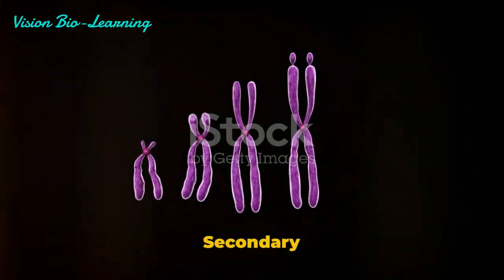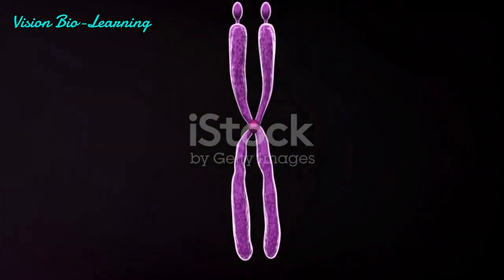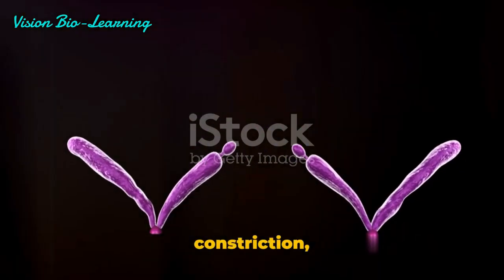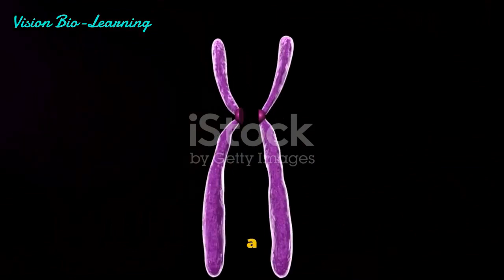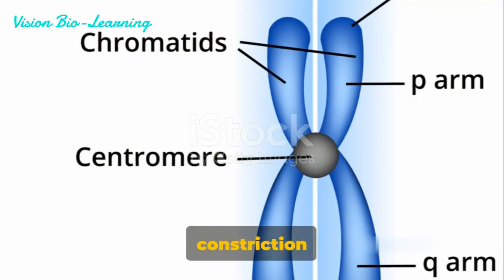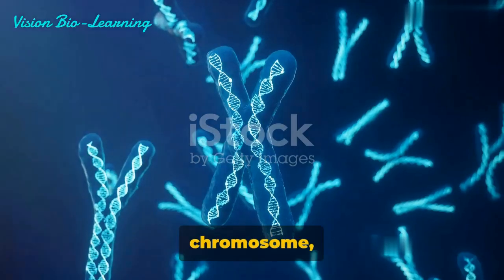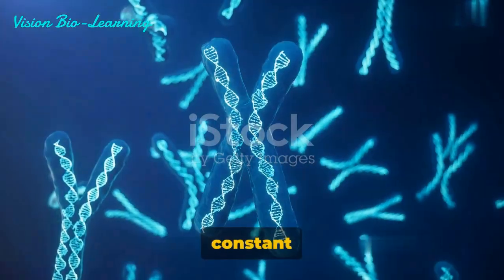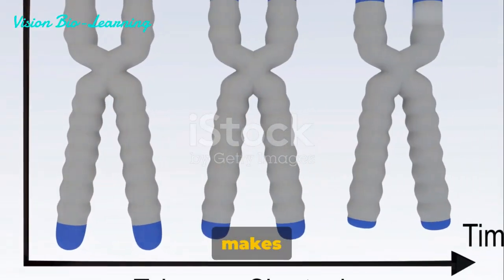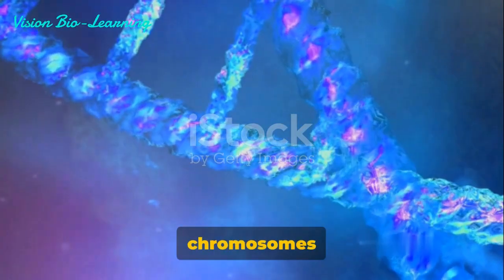Have you ever wondered what a secondary constriction or nucleolar organizer is? Let's dive right into it. Secondary constriction is an intriguing component of a chromosome — a feature that exists beyond the primary constriction or centromere. It can be found at various points on a chromosome, yet it remains constant in its position and extent. This constancy makes it an invaluable tool in the identification of specific chromosomes within a set.